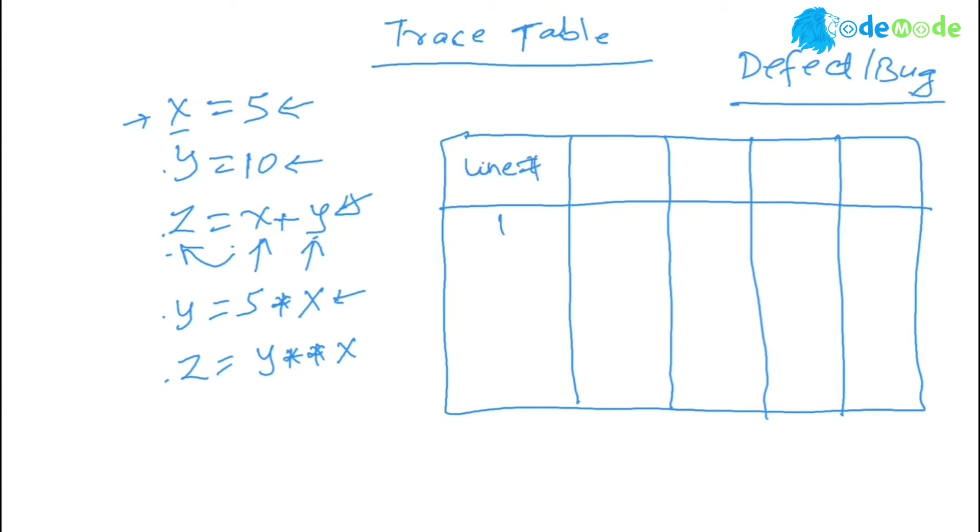And it's the line number one, and it is two, three, four, and five. So line number one, two, three, four, and five.